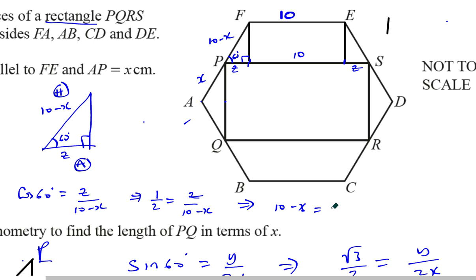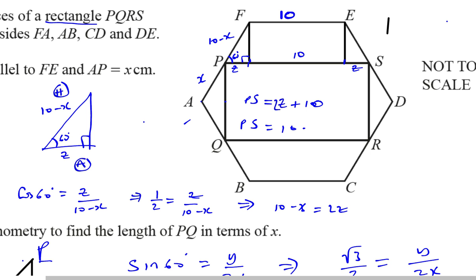So the total length PS equals Z plus 10 plus Z, which is 2Z plus 10. Substituting 2Z = 10 minus x, we get PS = (10 minus x) + 10, which equals 20 minus x — as we were required to show. I'll stop the video there and go to the next part in the next video.